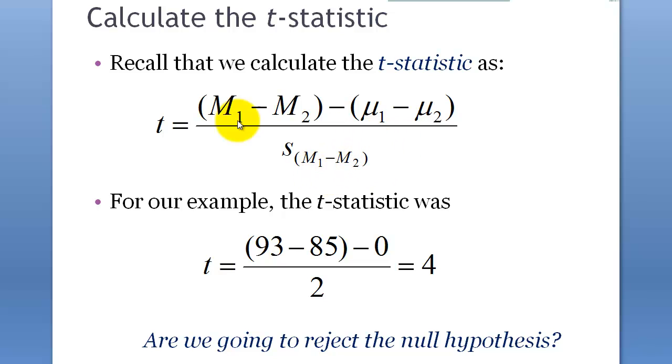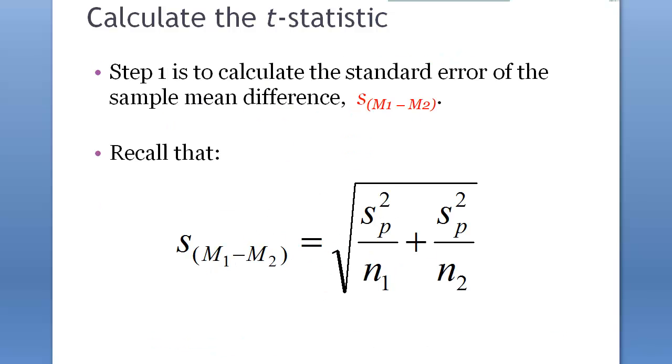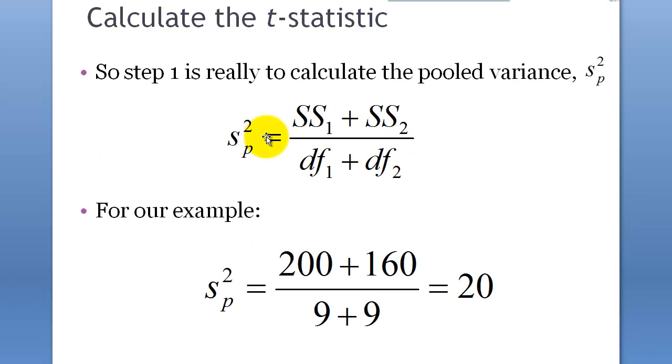This is how you get it, square root of this plus this. So basically what we really want to know is this: pooled sample variance.